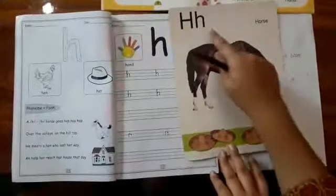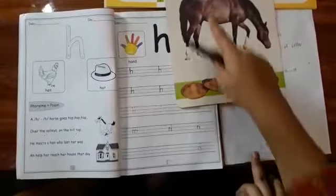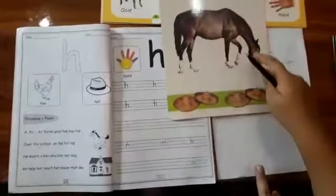This is a flash card of letter H. This is horse - H, horse. These are hats - H, hats. Horse, hats.